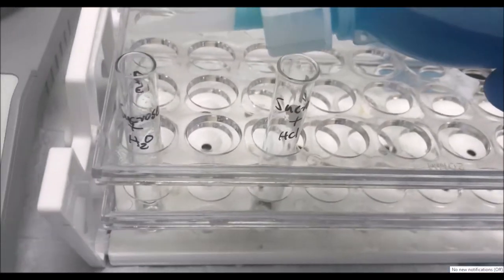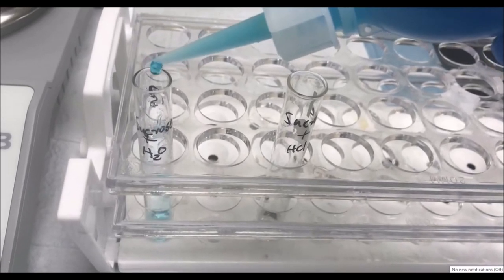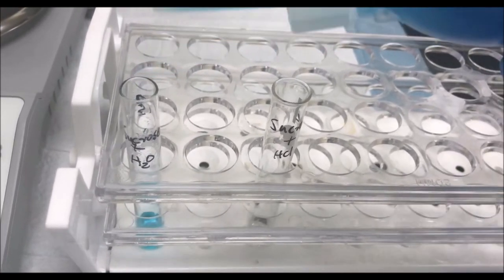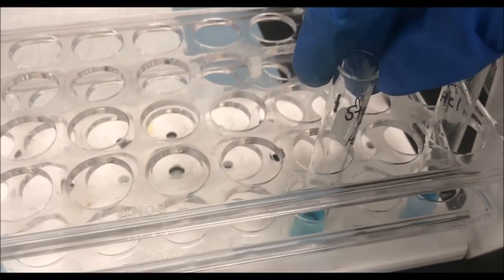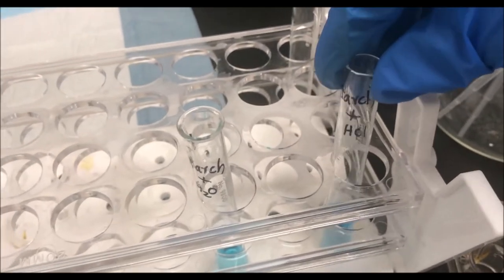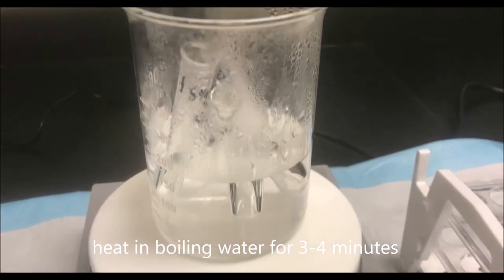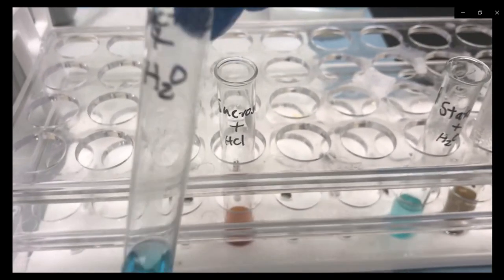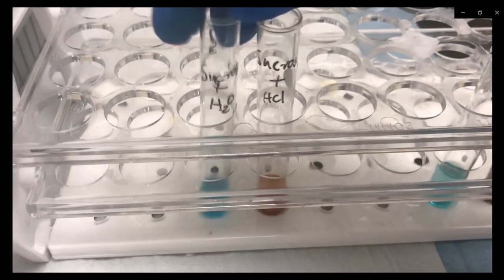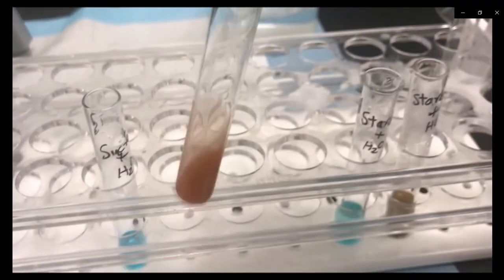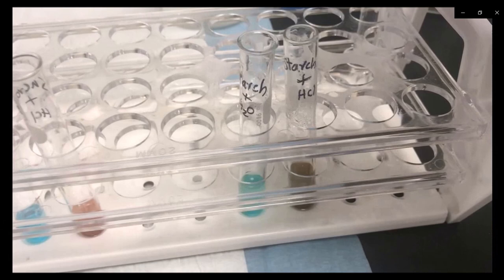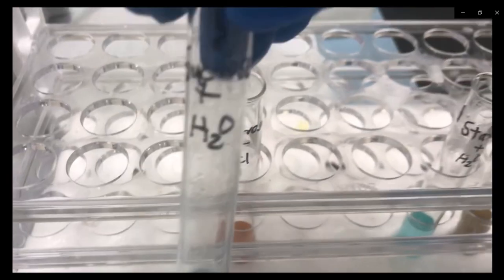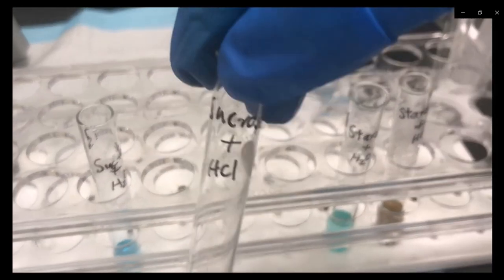Add 10 drops of Benedict's reagent to the remaining solutions. If the solution is the same color as the Benedict's reagent, there has been no reaction. If it changes into reddish orange, it indicates the presence of reducing sugar or glucose. This confirms the acid hydrolysis of a disaccharide and a polysaccharide.